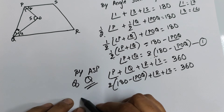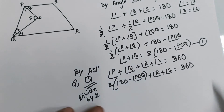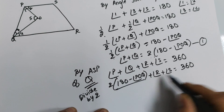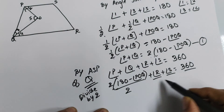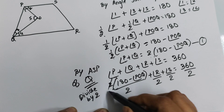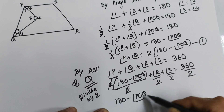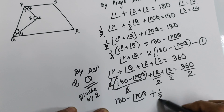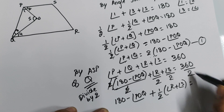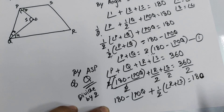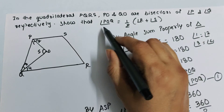Now we divide the entire equation by two. The first term gives 180 minus angle POQ. Taking half outside the remaining terms, we get: 180 minus angle POQ plus half of angle R plus angle S equals 180 degrees.